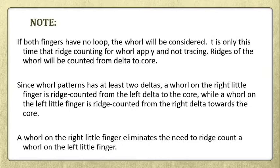Ridges of the whorl will be counted from the delta to the core. Since a whorl pattern has at least two deltas, a whorl on the right little finger is ridge counted from the left delta to the core, while the whorl on the left little finger is ridge counted from the right delta towards the core.